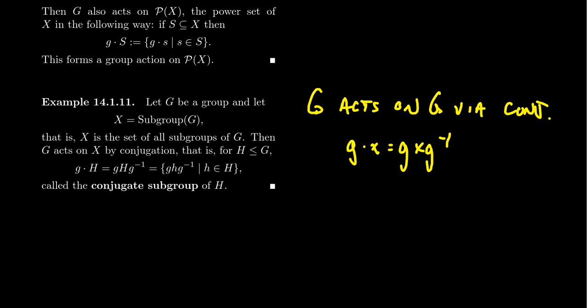Then this power set action does restrict to subgroups if we act by conjugation. That is to say, G dot H, where G is an arbitrary element of big G and H is an arbitrary subgroup. G acts upon H by conjugation. We can take the conjugate subgroup GHG inverse. This will be the collection of all elements of the form GHG inverse.